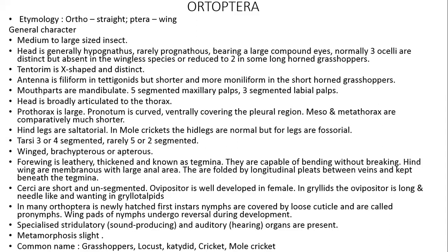Head is broadly articulated to the thorax. Prothorax is large and curved, ventrally covering the pleural region, extending towards the meso and metathorax and up to the pleural region ventrally. Meso and metathorax are comparatively much shorter.